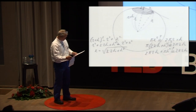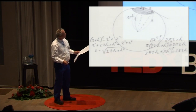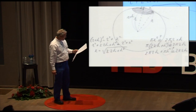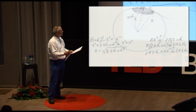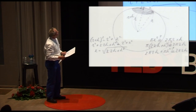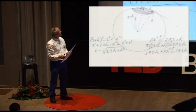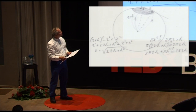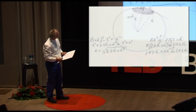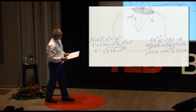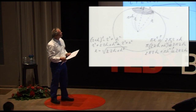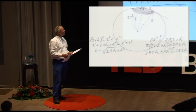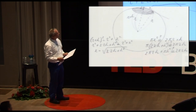How long is X? According to the Pythagorean theorem, you have this equation: R plus H, squared, equals R squared plus X squared. Expanding: R squared plus 2RH plus H squared equals R squared plus X squared. So X equals the square root of 2RH plus H squared.